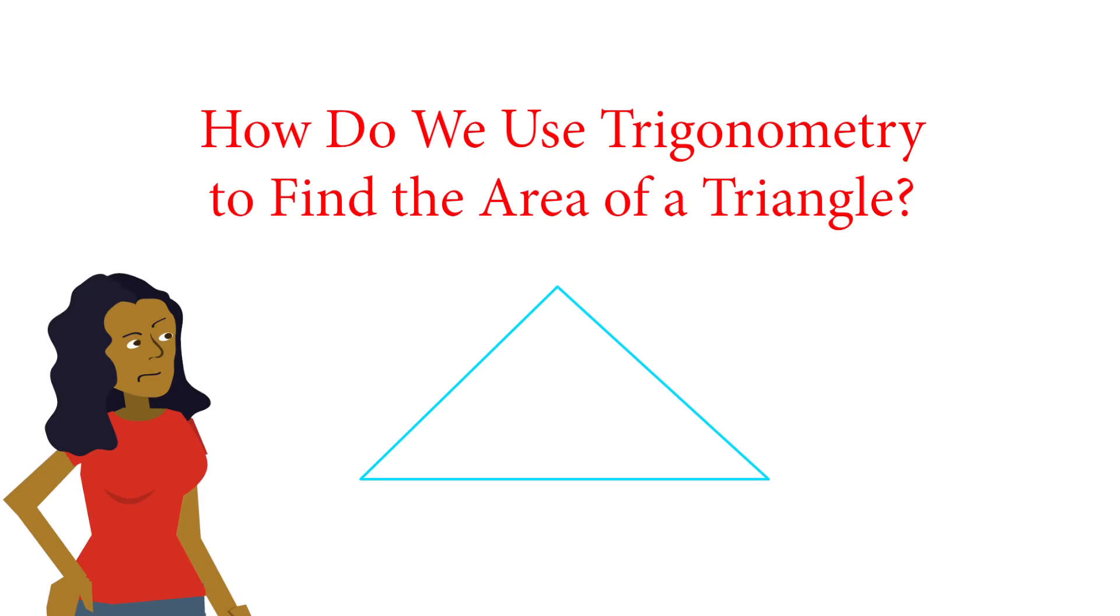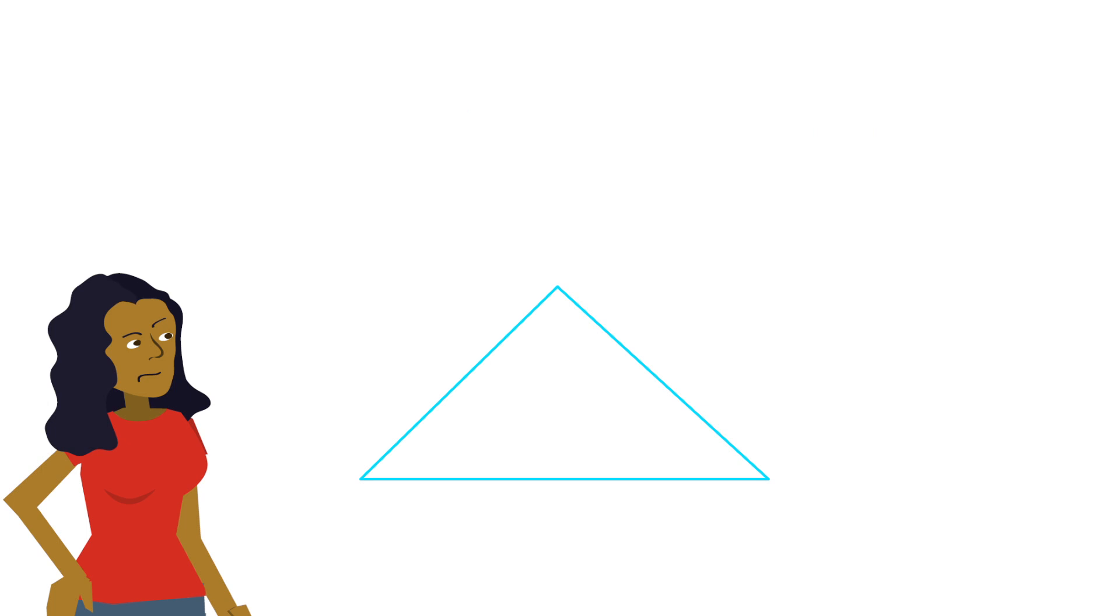How do we use trigonometry to find the area of a triangle? We know how to find the area of a triangle if we're given some specific information.